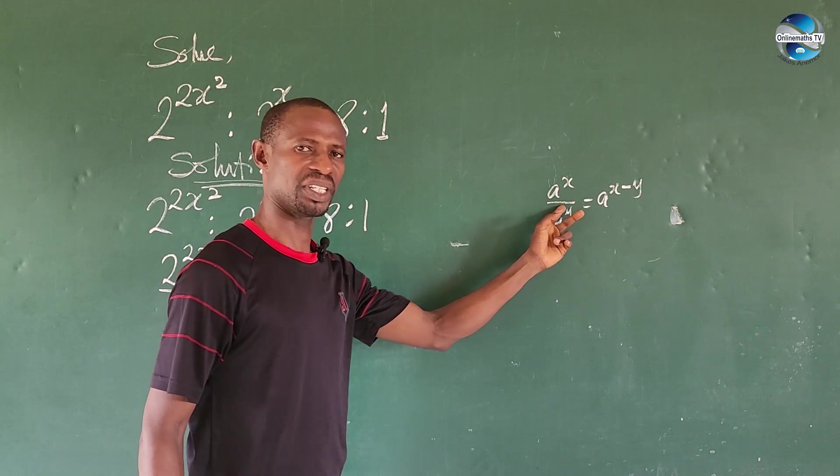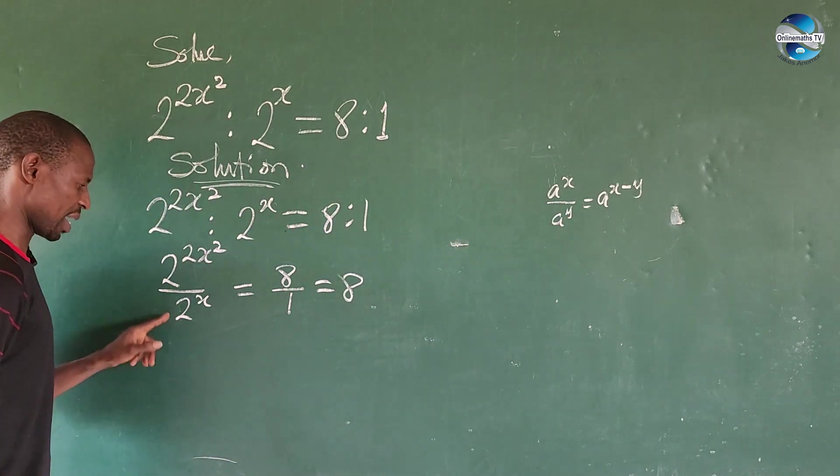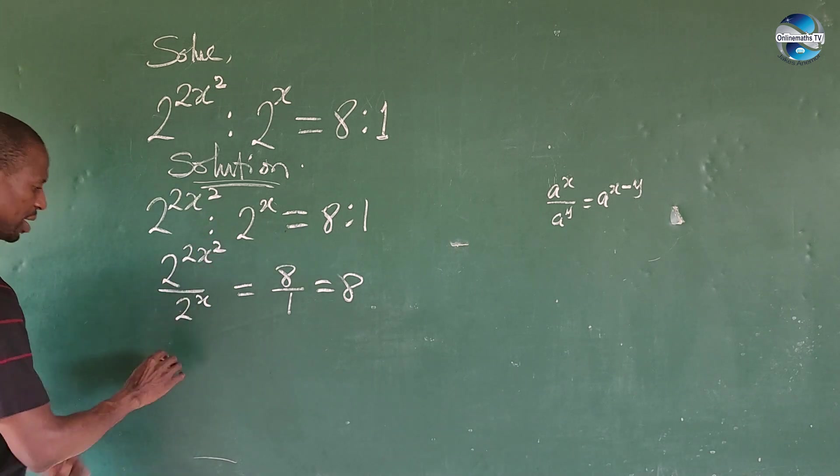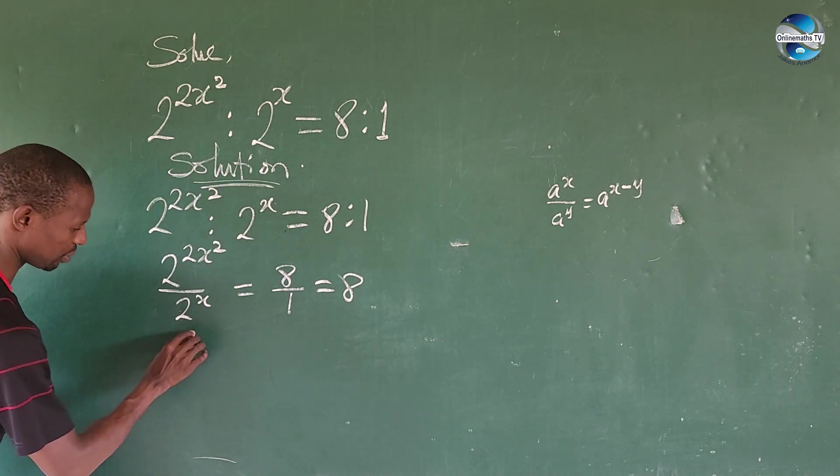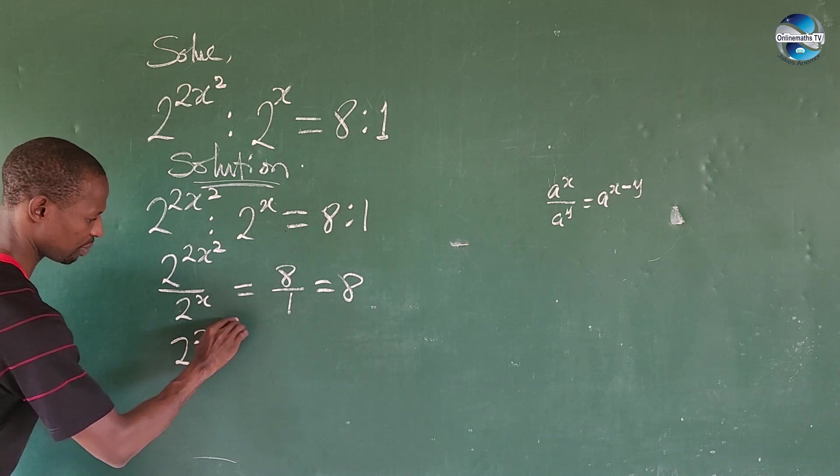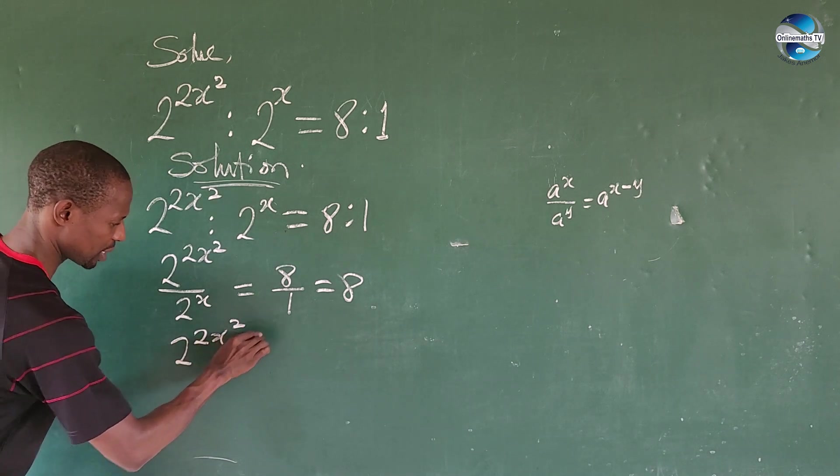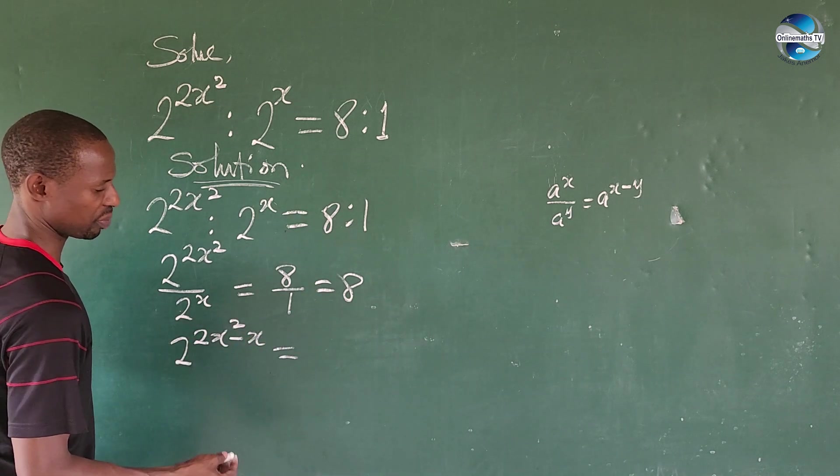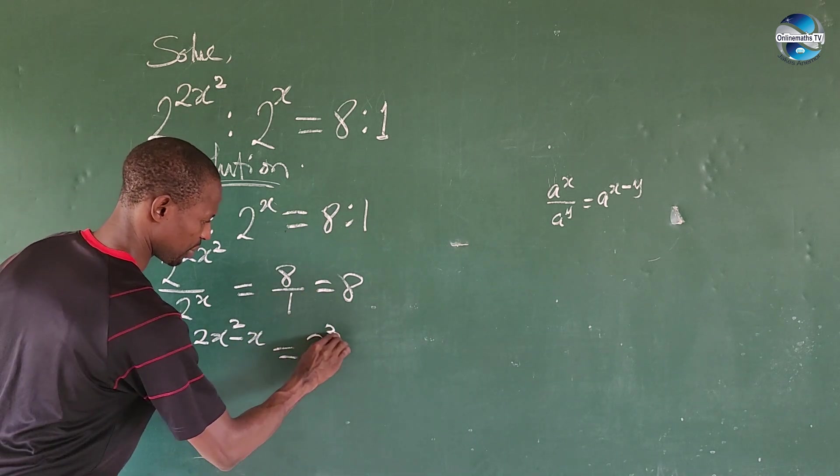The bases here are the same and we have division, so we can subtract the exponents. This gives us 2^(2x²-x) = 8. We can express 8 as 2^3, so we have 2^(2x²-x) = 2^3.